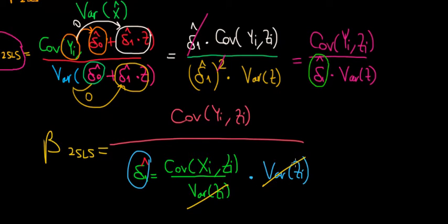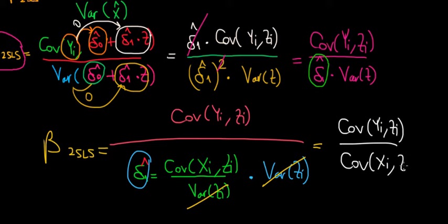Variance of z with variance of z cancels out. What are we left with? We have covariance of y, z, i divided by the covariance of x, i and z, i.